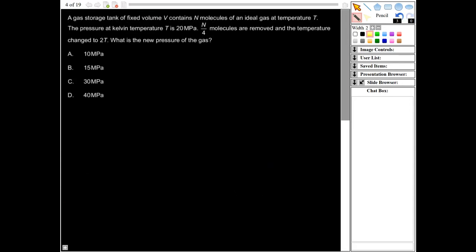Okay, in this one, it says this gas tank, a gas storage tank of fixed volume V contains n molecules of ideal gas at temperature T. The pressure at current temperature T is 20 MPa. n over 4 molecules are removed, and the temperature change to 2T. What is the new pressure of the gas?